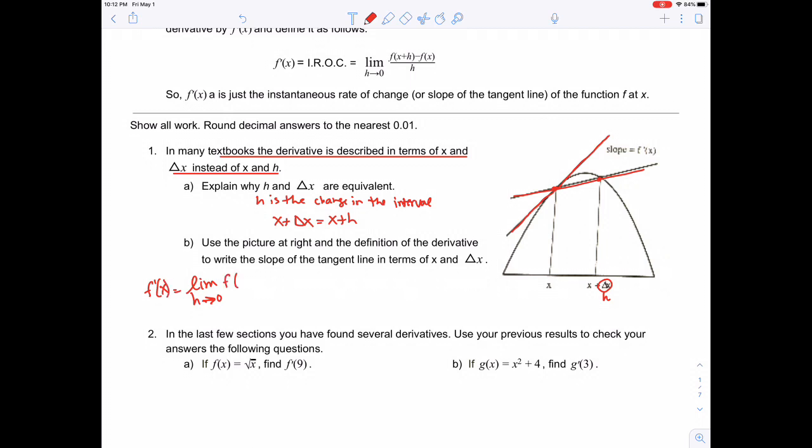f of x plus delta x minus f of x all divided by delta x minus x. When you simplify, you get f of x plus delta x minus f of x all over delta x, since the x's cancel. Remember these are interchangeable - you can use delta x or h. It's just the change in the interval. This is denoted as f prime of x, which is the limit as h approaches 0.